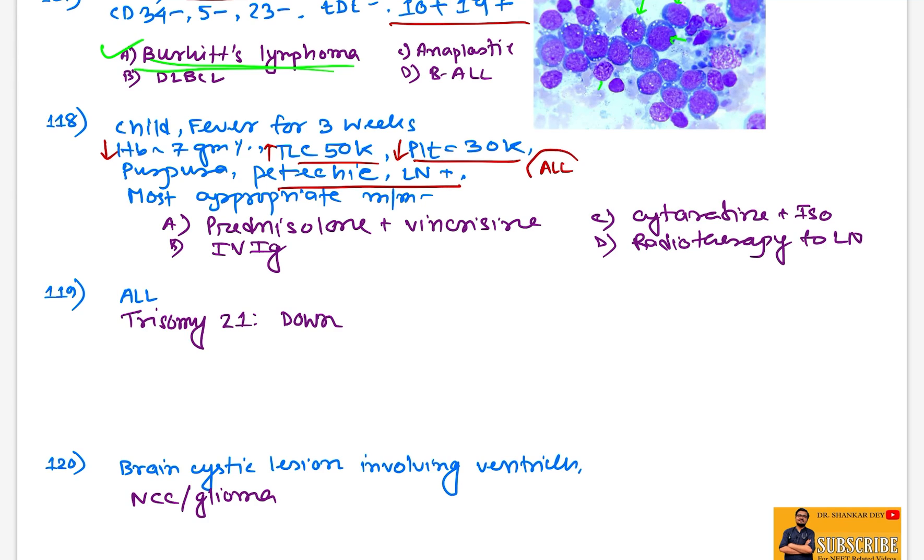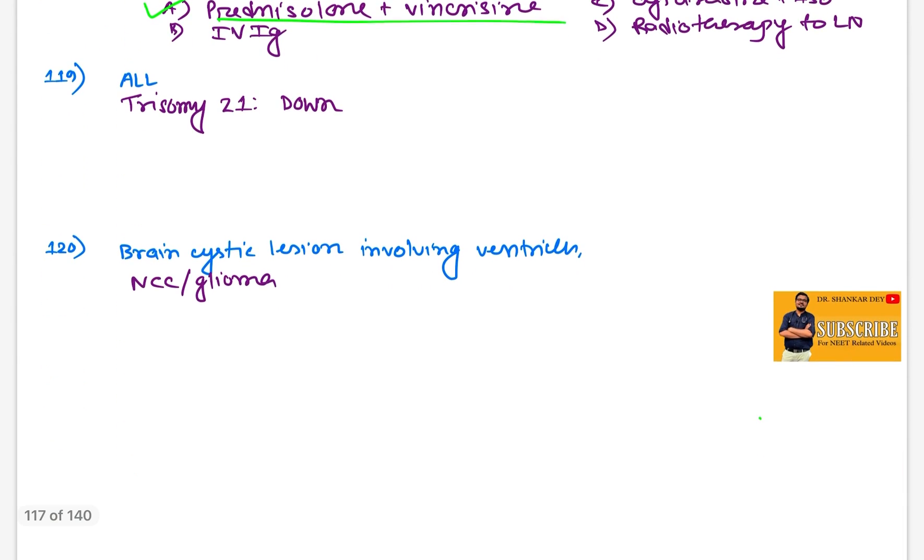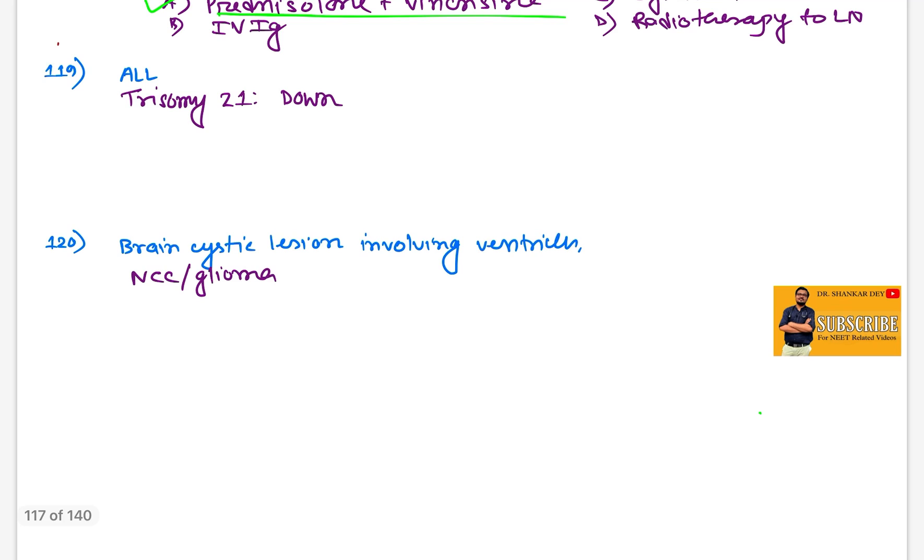Child with more TLC and anemia, thrombocytopenia - the most appropriate management will be prednisolone with vincristine. Whether this question was there or not I'm not sure, but I think one question was there related to disease association. ALL is commonly associated with Down syndrome, trisomy 21. Down syndrome is much more associated with leukemia like ALL.